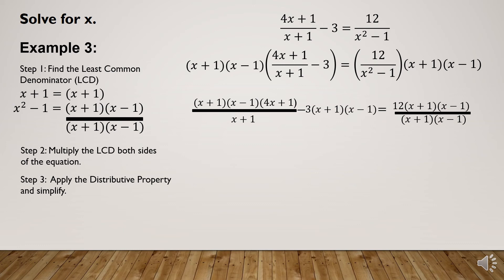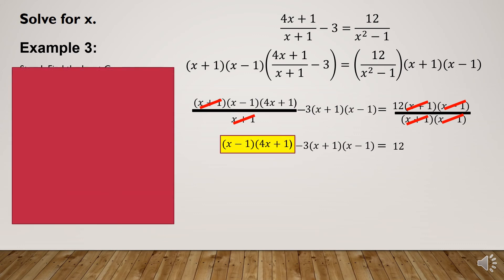Simplifying each term: In the first term, the common factor (x + 1) cancels from numerator and denominator. The second term has no denominator. In the third term, both (x + 1) and (x - 1) cancel out. Copying remaining factors: the first term becomes (x - 1)(4x + 1), the second term is -3(x + 1)(x - 1), and the right side equals 12.